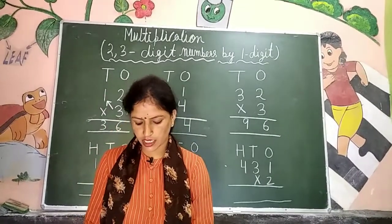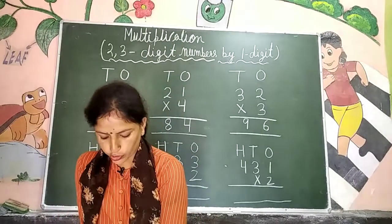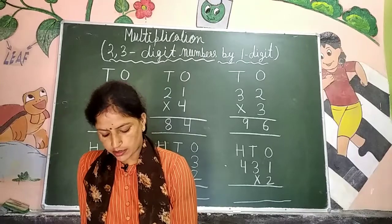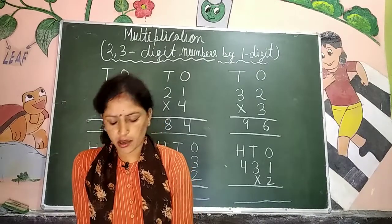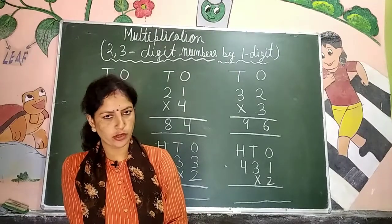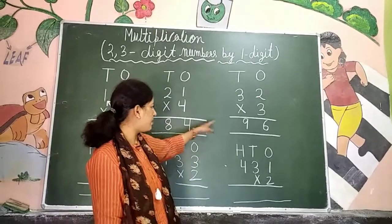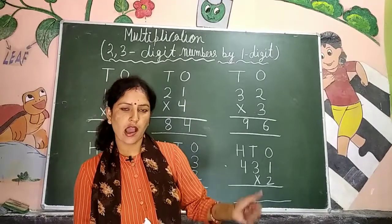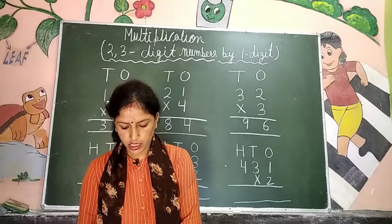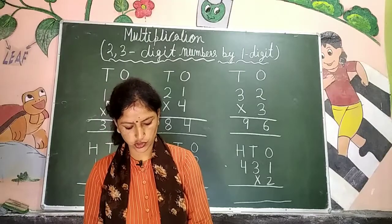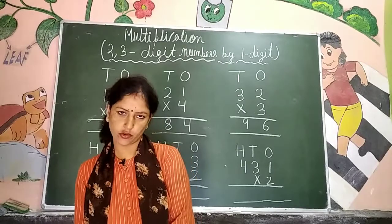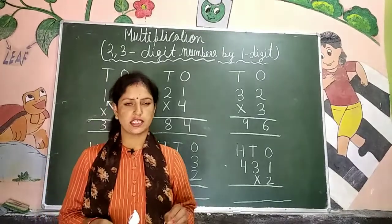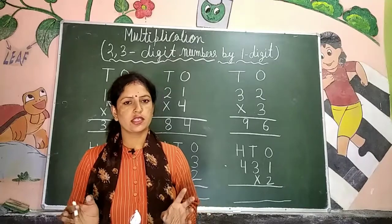आपकी book page number 63 में थी. इसके मैंने 3 questions करवाए हैं, आपने 3 और करने हैं. अगर आप इसको book में पूरा fill कर सकते हो तो page को पूरा fill करना है. Notebook में आपने 3 मैंने यहाँ पे करवाए, 3 और करने हैं — total 6 questions करने हैं. Book का homework मुझे submit नहीं करना है, सिर्फ notebook में जो किये होंगे वही submit करना है. Now, 3-digit की 1-digit के साथ जो questions हैं वो page number 65 में हैं. 3-digit में एक और digit add हो जाएगी और same process होगी जो 2-digit में थी — कोई भी changes नहीं हैं.